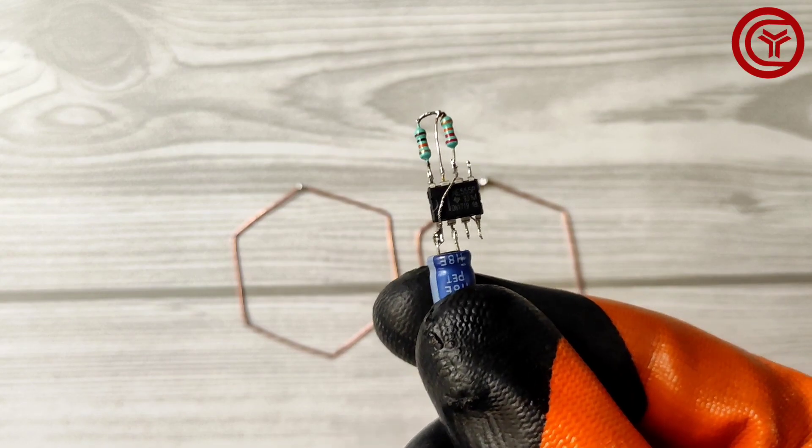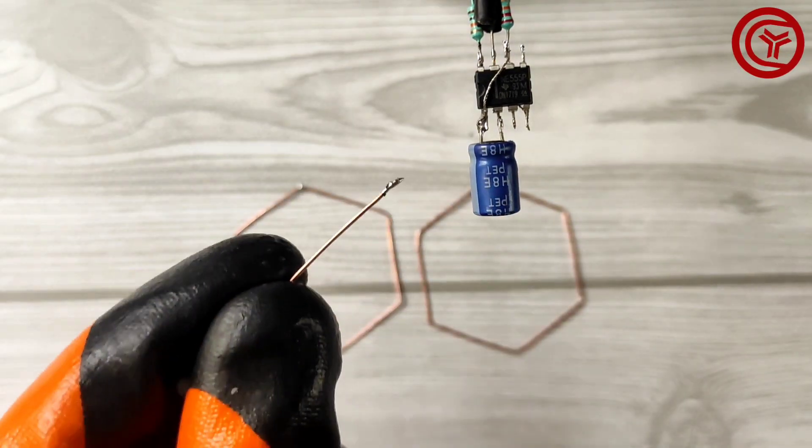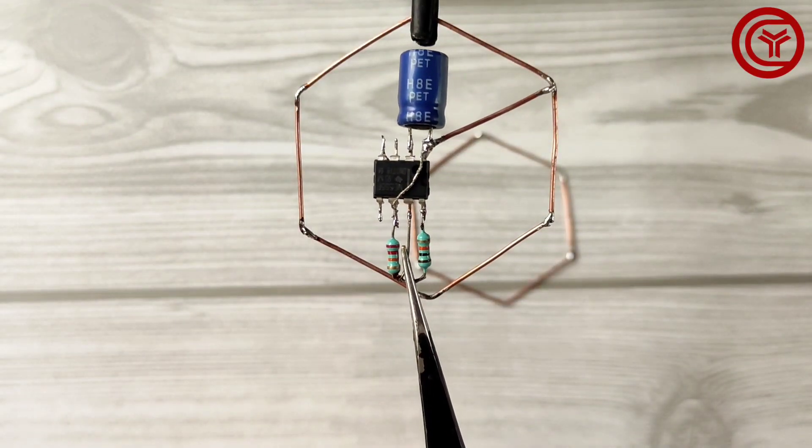Take the IC and solder small copper wire on pin 1. Now solder it to this one ring.